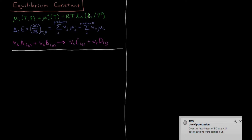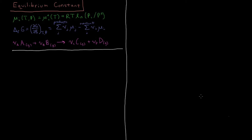If your pressure is in units of bar then you don't need to include this P⁰, but if it is not in bar — for example if it's in atmospheres or millimeters of mercury — then just use whatever is the equivalent of one bar in that unit system.